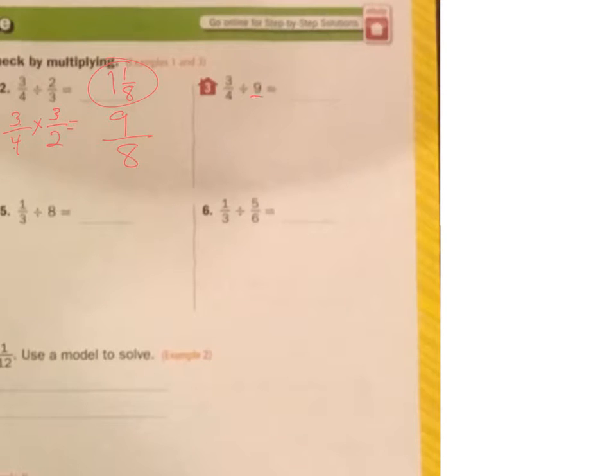I'm going to make this into a fraction like that. So now I keep this, change the sign, and change the last one to the reciprocal. I see I can divide this by 3, divide that by 3. That gets me 1, that gets me 3. As long as I do the same thing to the top and the bottom, it's okay. 1 times 1 is 1, 4 times 3 is 12. My answer is 1/12.